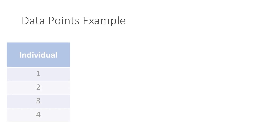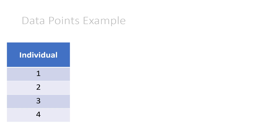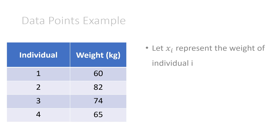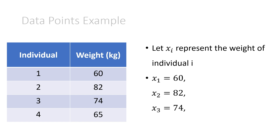Let's look at an example. We have four individuals, so that's setting n equal to 4. You can set n equal to any positive integer and this should work. We have their weight in kilograms. The first individual has a weight of 60 kilograms, second is 82, third is 74, and fourth is 65. So using our notation, let xi represent the weight of individual i. Then we know that x1 is equal to 60, x2 is 82, x3 is 74, and x4 is 65.